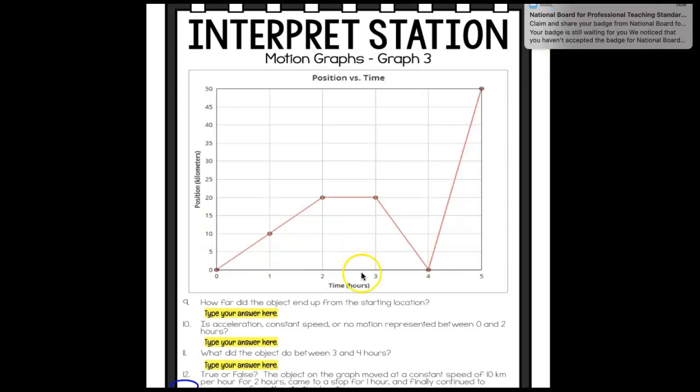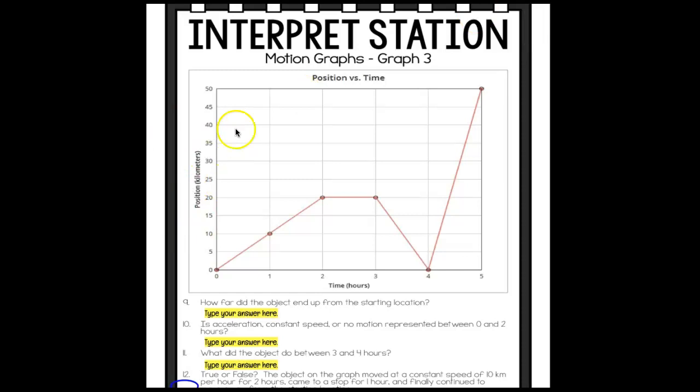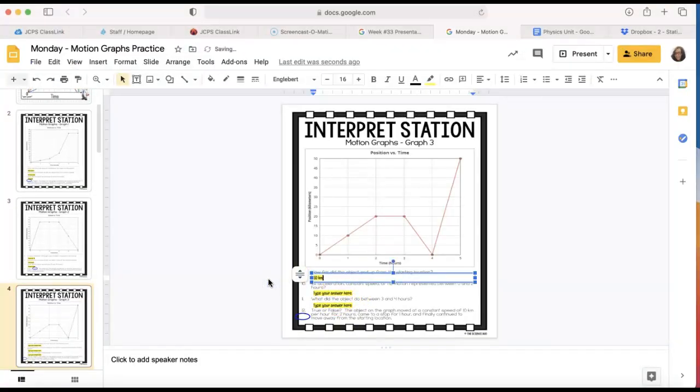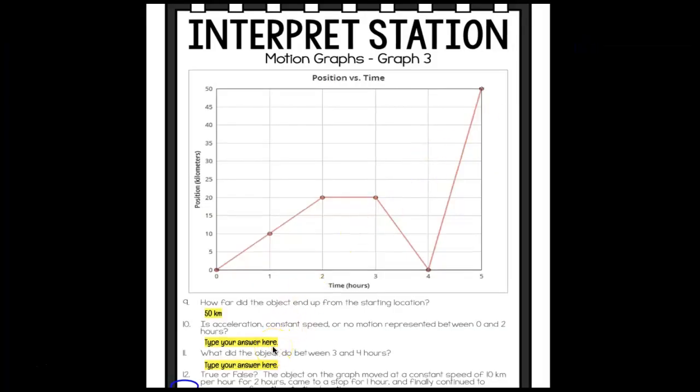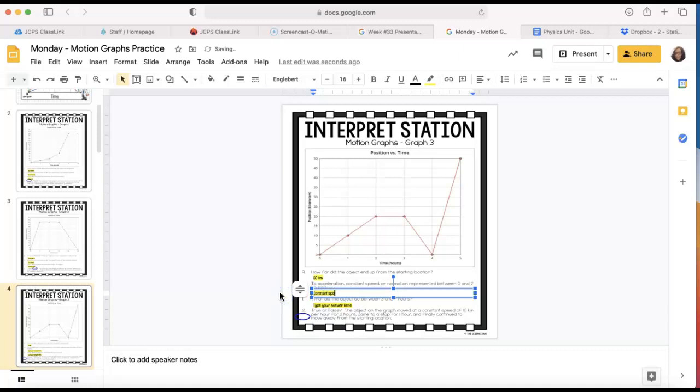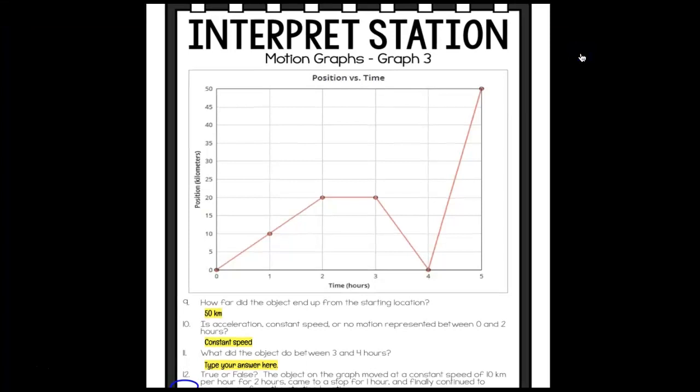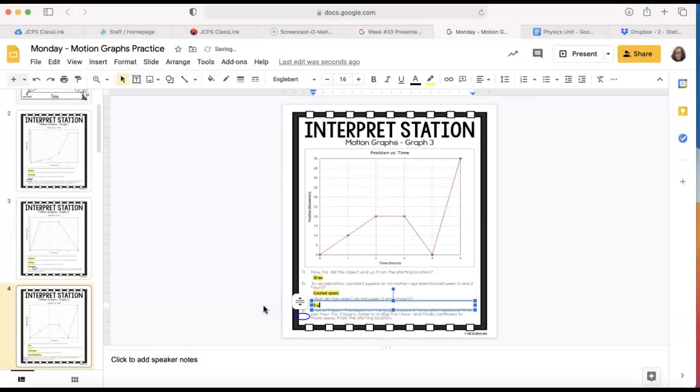The last one is a position time graph. So we have hours down here and then we have position on the y-axis. It says how far did the object end up from the starting location? It ended up all the way up here at 50 kilometers. So for number 9 you'll write 50 kilometers. And then number 10 says, is acceleration, constant speed, or no motion represented between 0 and 2 hours? We know a diagonal line when we're dealing with our position or distance in time represents a constant speed. So number 10 represents constant speed. And then 11 says what did the object do between 3 and 4 hours? It was stopped for an hour, but then it went back to its starting point.